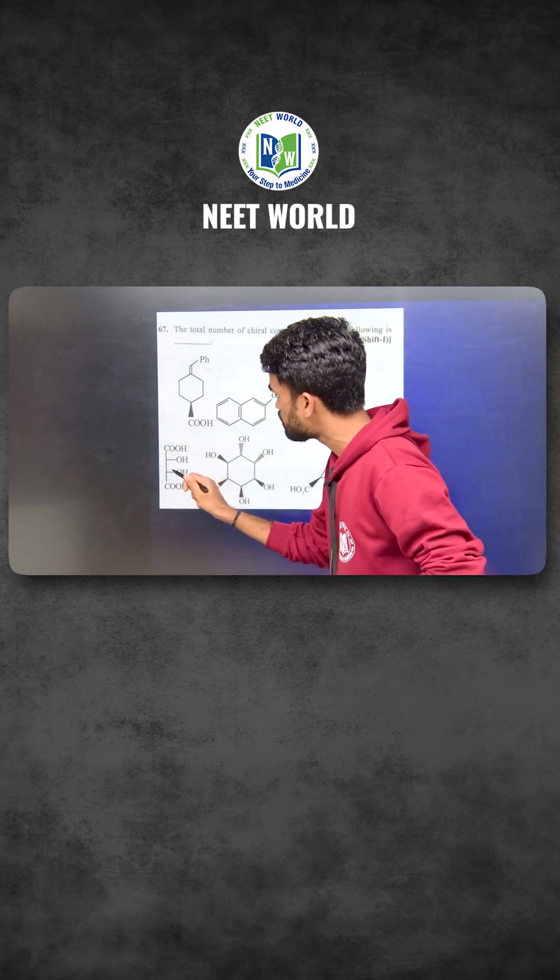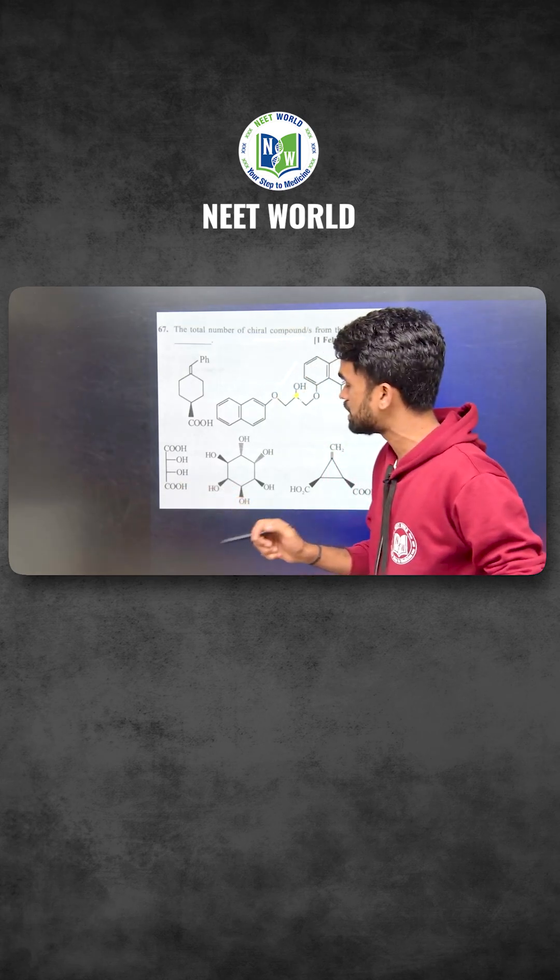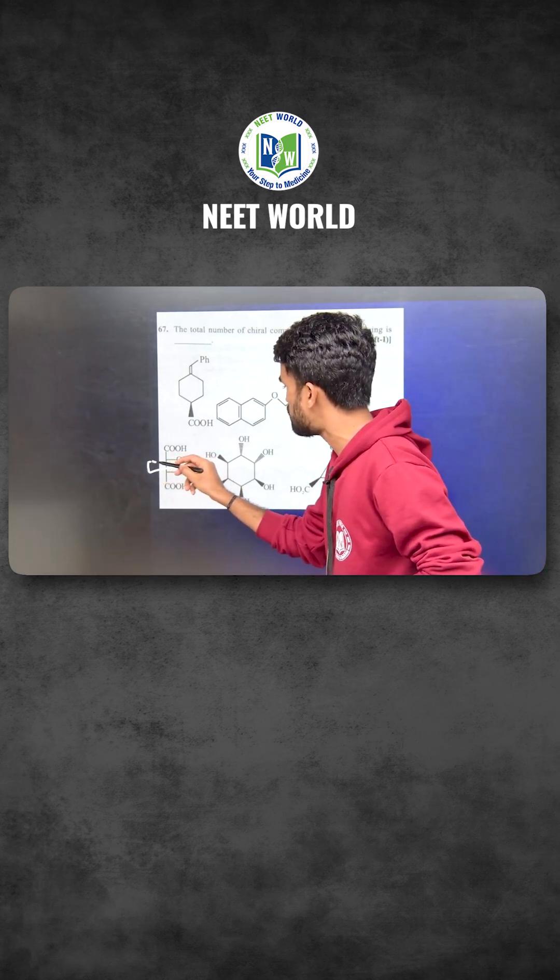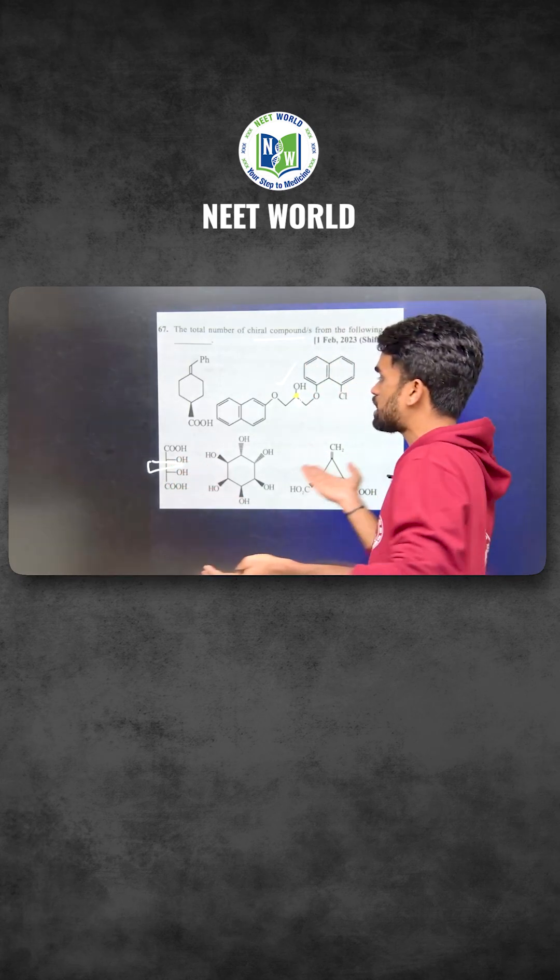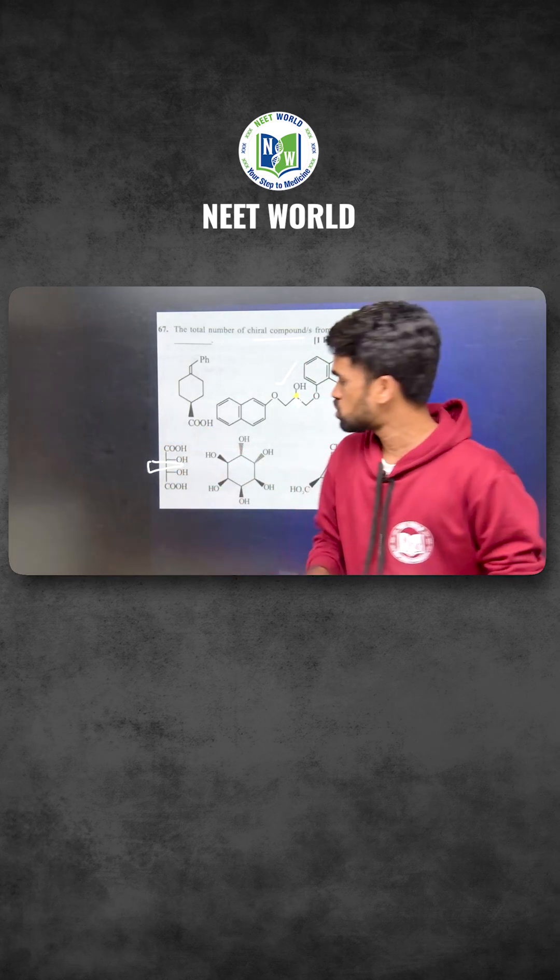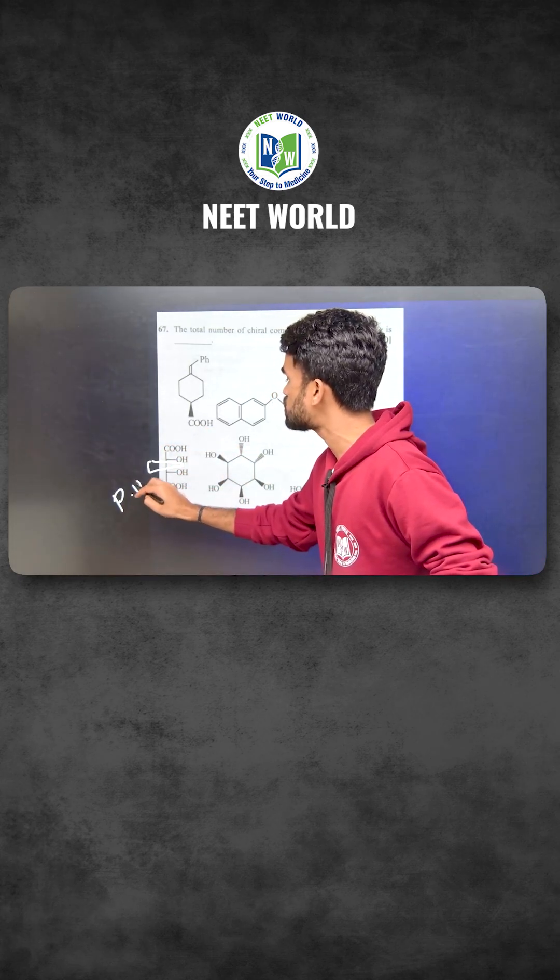Look at option C. This is mesotertaric acid. Now if I pass a plane from the center of the molecule, it can be divided into two equal halves. So I can say it has plane of symmetry, therefore if it contains plane of symmetry, optically inactive or achiral.